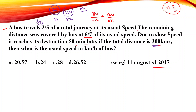We have the new time. That time corresponds to 120 km at reduced speed. The original time would be 120 divided by 7x. The difference between the new time and the original time gives us the delay.